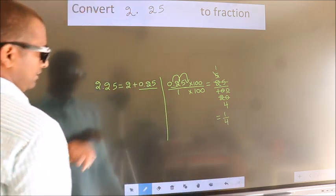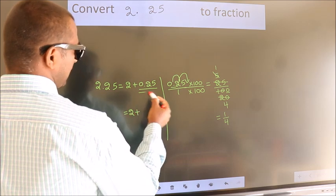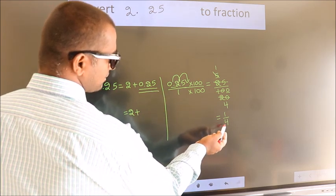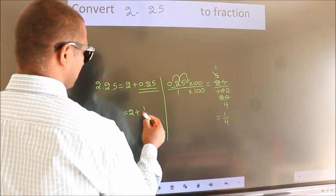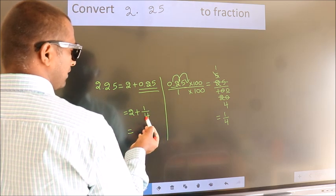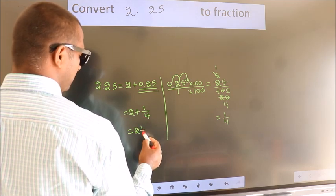Now here, 2 plus, in place of 0.25, now we write this fraction 1 by 4. So 2 plus 1 by 4 in mixed fraction it is 2 and 1 by 4.